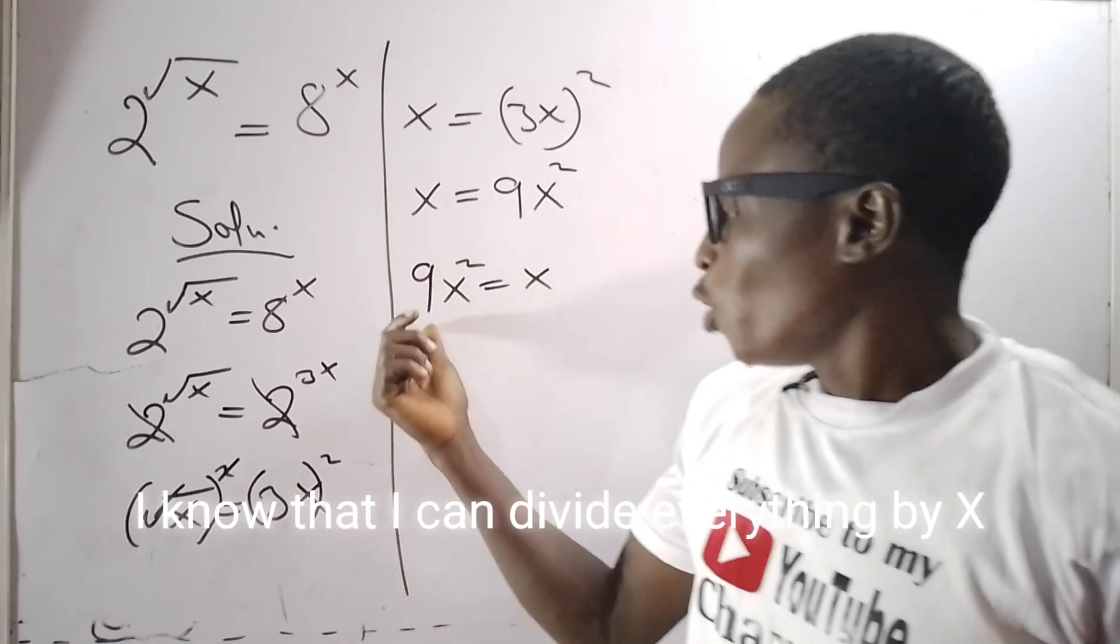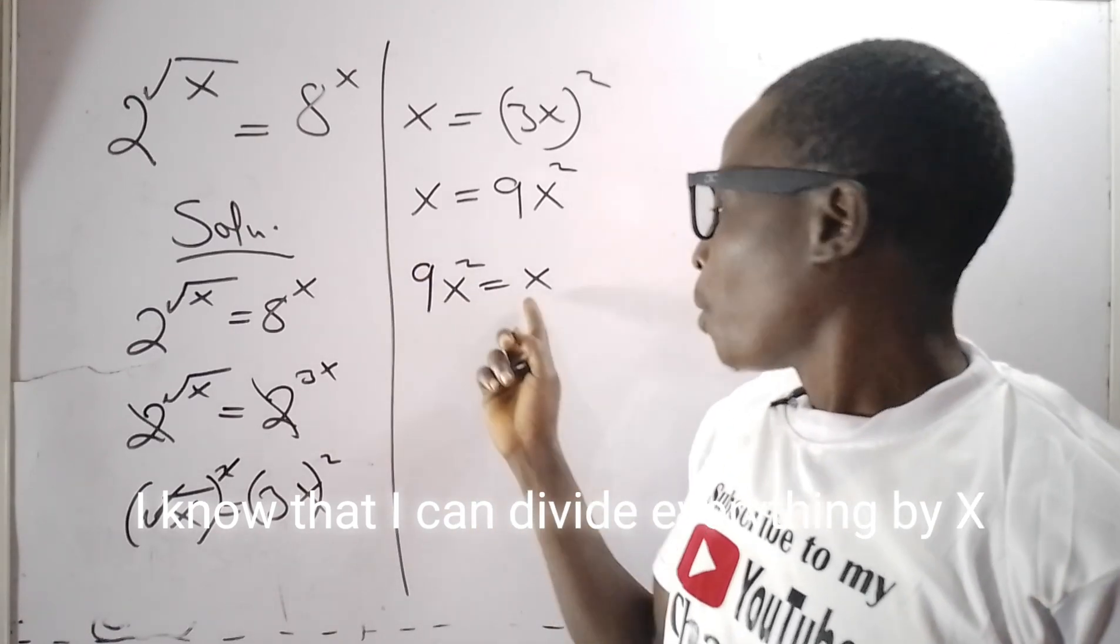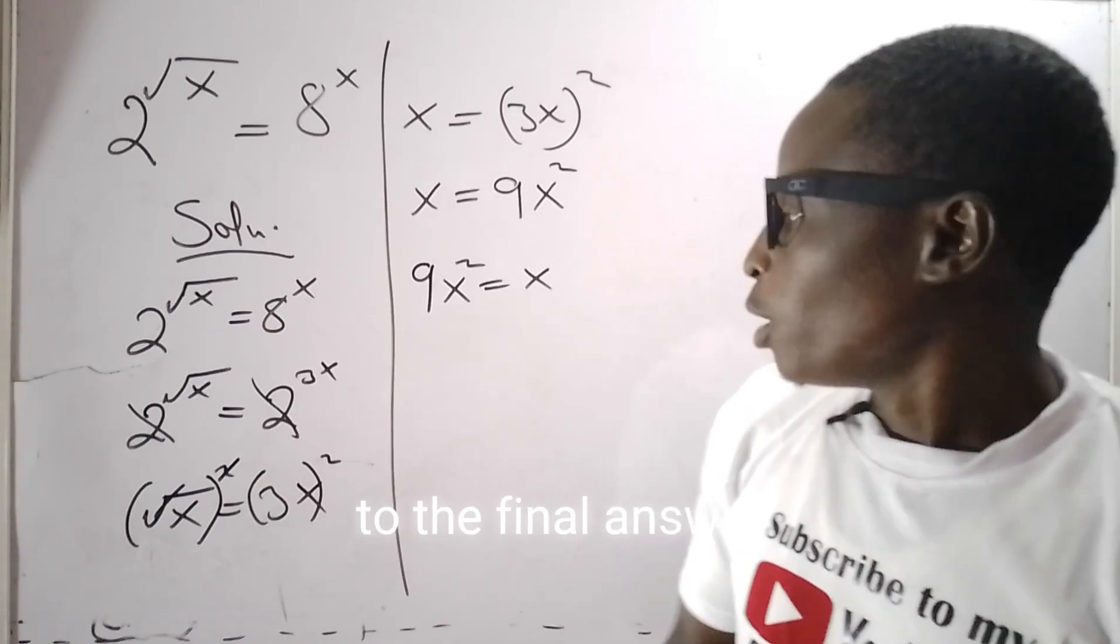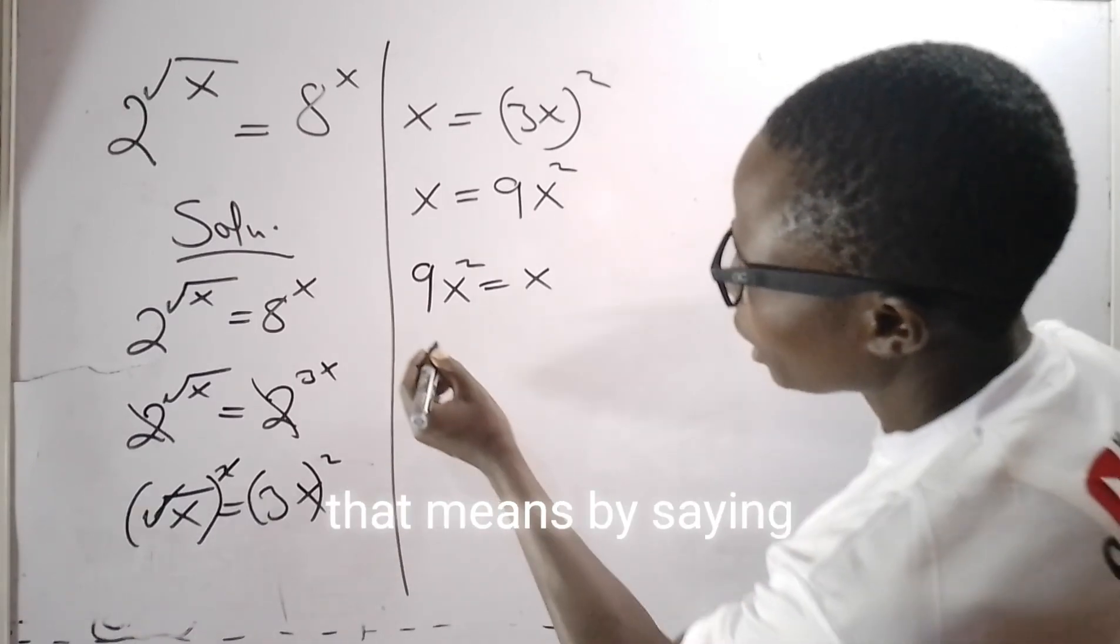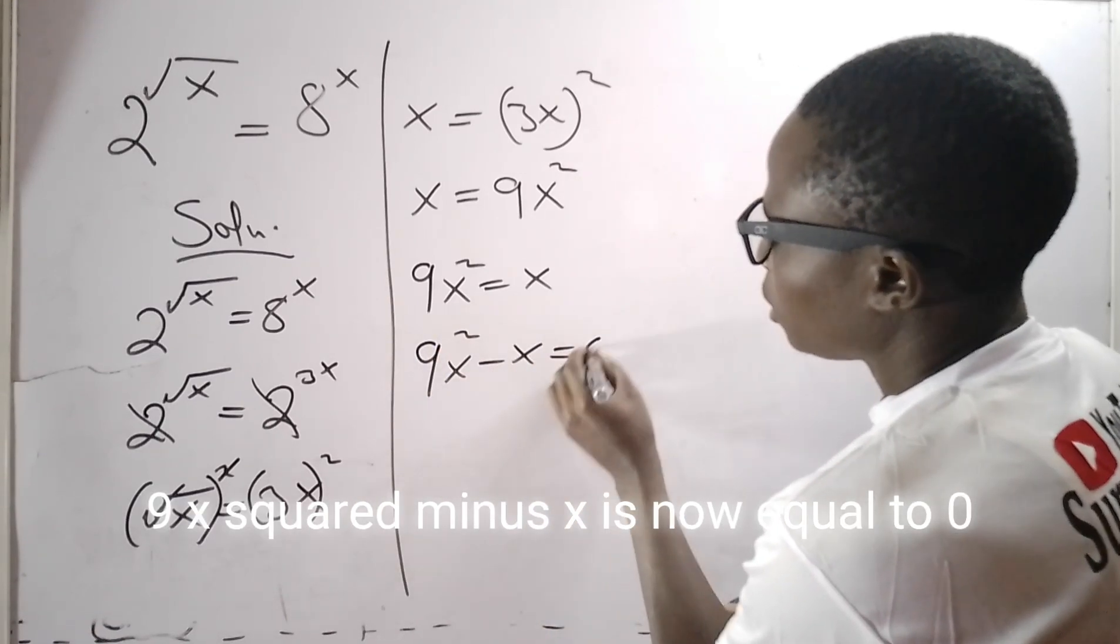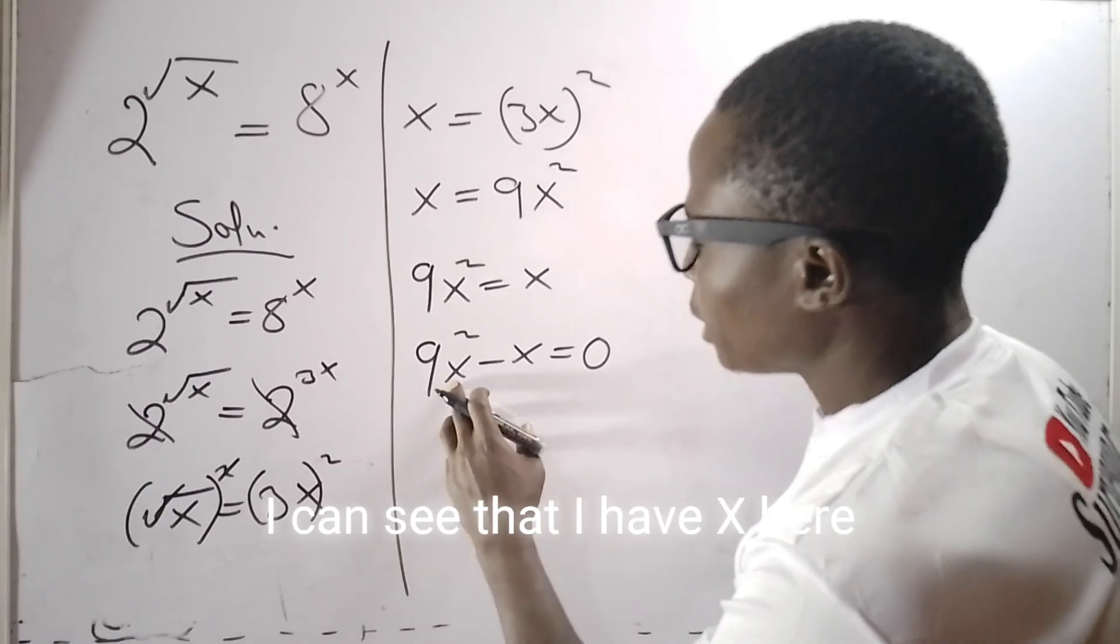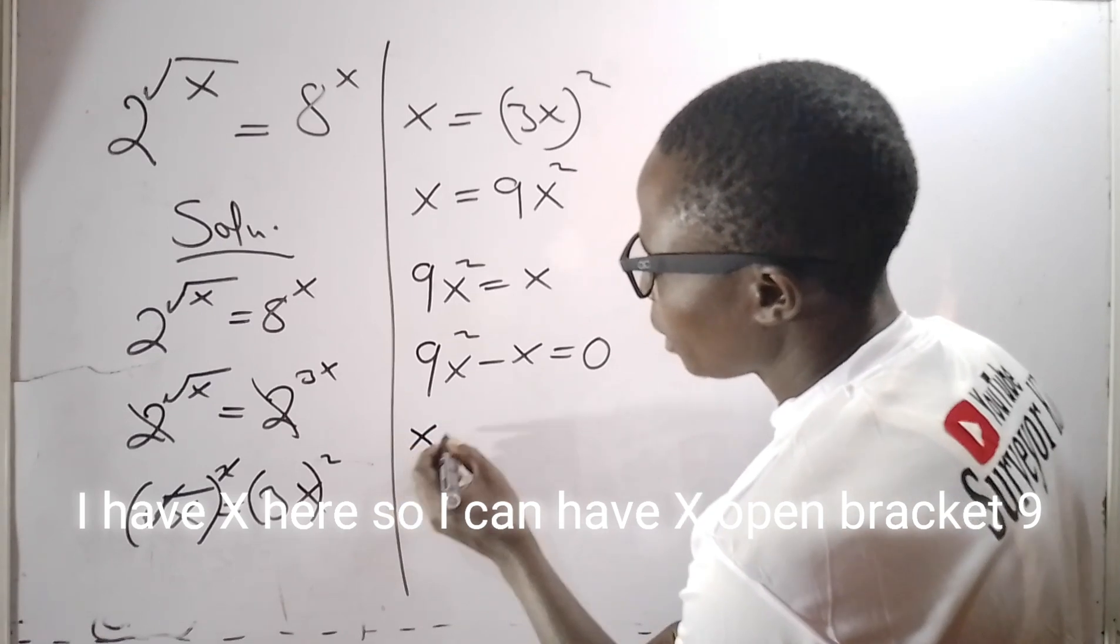I know that I can divide everything by x and I will still arrive to the final answer, but I want to let everything be equals to zero. That means 9x squared minus x is now equals to zero. So I can see that I have x here, I have x here, so I can have x open bracket 9x minus 1 is equals to zero.